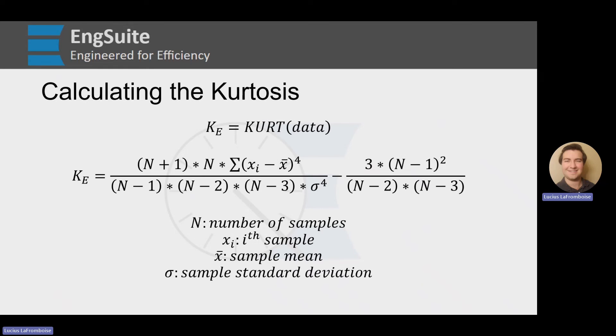The excess kurtosis formula that we're going to be using later on in this video is n plus 1 times n times the sum of xi minus x bar to the fourth over n minus 1 times n minus 2 times n minus 3 times the standard deviation to the fourth minus 3 times n minus 1 squared over n minus 2 times n minus 3, where n is the number of samples, xi is our i-th sample, x bar is the sample mean, and sigma is our sample standard deviation.